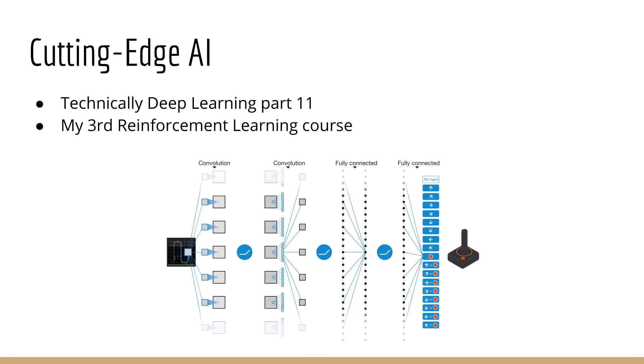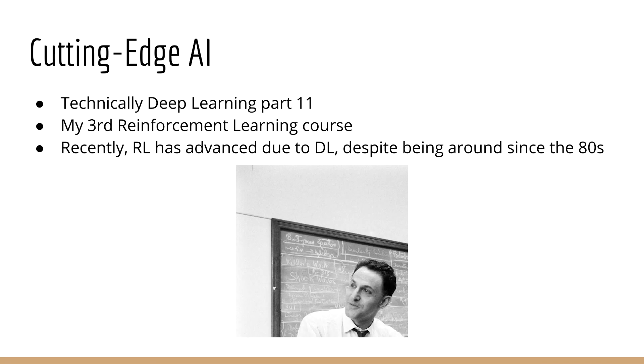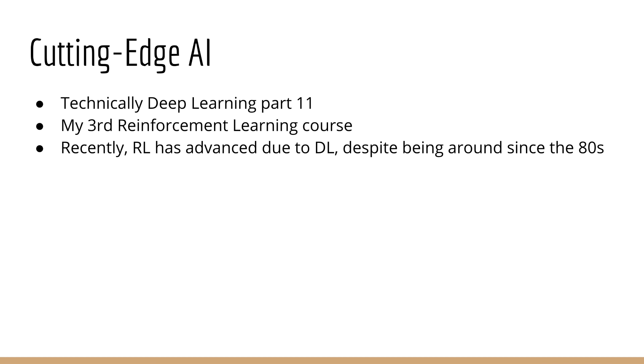Deep reinforcement learning is actually the combination of two topics, reinforcement learning and deep learning. While both of these have been around for quite some time, it's only been recently that deep learning has really taken off and along with it reinforcement learning. The maturation of deep learning has propelled advances in reinforcement learning, which has been around since the 1980s, although some aspects of it, such as the Bellman equation, have been around for much longer.